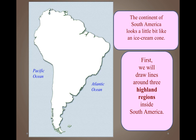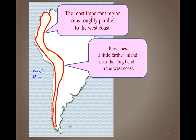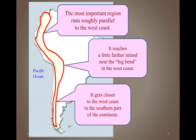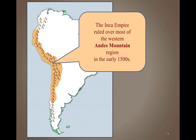The continent of South America looks a little like an ice cream cone. First, we're going to draw lines around three highland regions. The most important region runs roughly parallel to the west coast, reaching a little further inland near a big bend and closer to the coast in the southern part. This is the Andes Mountains — a region of young rocks, the result of earthquakes and volcanoes, and part of the Ring of Fire, with high rugged mountains.